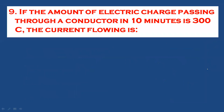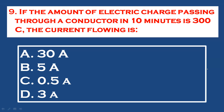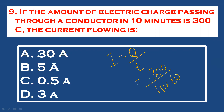Question 9: If the amount of electric charge passing through a conductor in 10 minutes is 300 coulombs, find the current flowing through the conductor. Using I = Q/t, Q = 300 coulombs, t = 10 minutes = 10 × 60 = 600 seconds. So I = 300/600 = 0.5 A. The answer is 0.5 A.